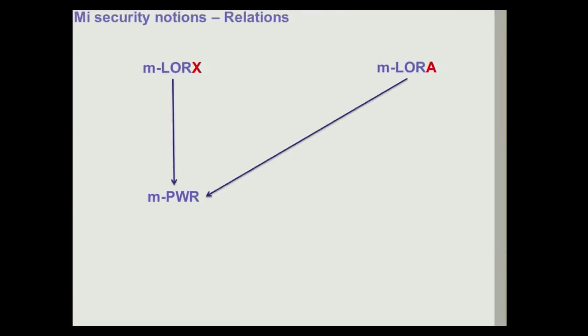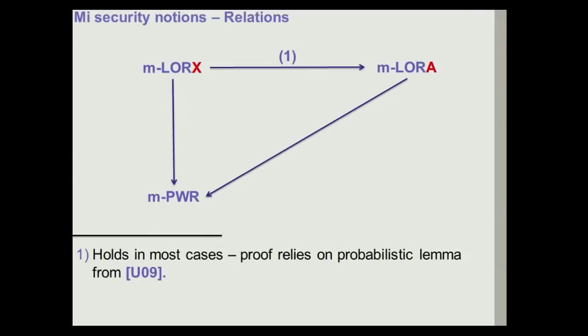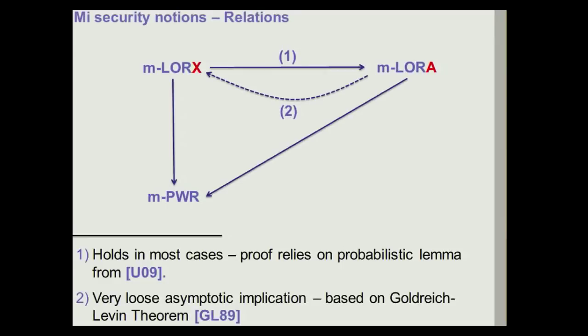So we looked at relationships between security notions. And for example you can have an interesting picture. So for example if you look at left or right security, both in the XOR and in the AND case, they end up implying the multi-instance version of password recoverability security. But what is interesting is that in fact the XOR advantage version of left or right security does imply in most cases to a very beautiful probabilistic lemma by Falk-Hunger, the AND version of left or right security. Which shows exactly that XOR is the right way to go. In fact there is also some sort of weak implication in the other direction that I won't discuss through the Goldreich-Levin theorem. But this is very weak in a computational sense and doesn't give us anything useful when we want to work with practical parameters.